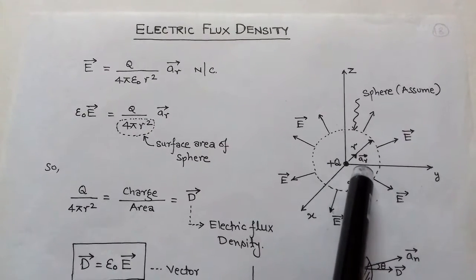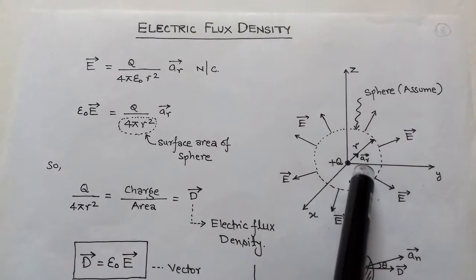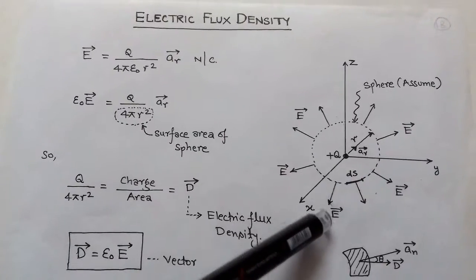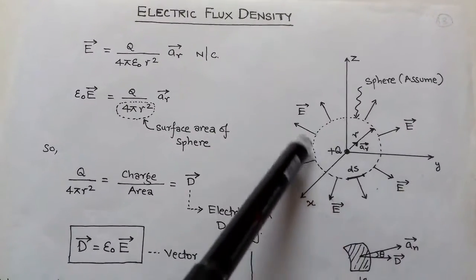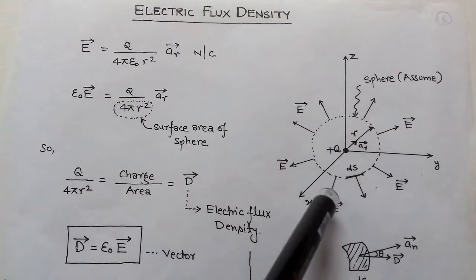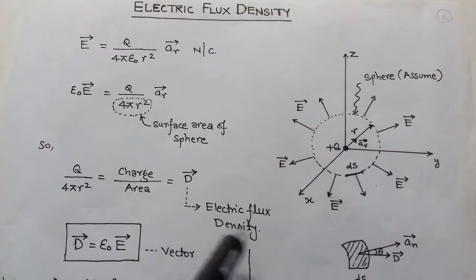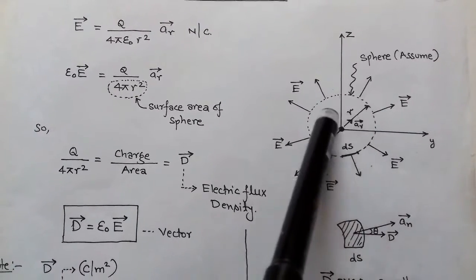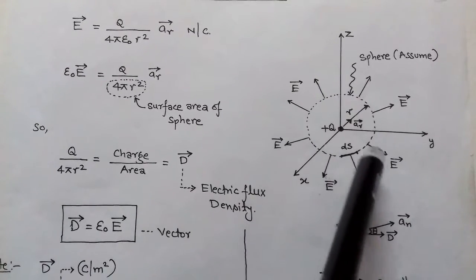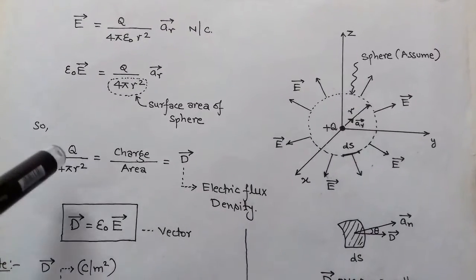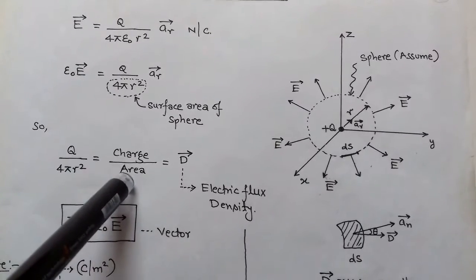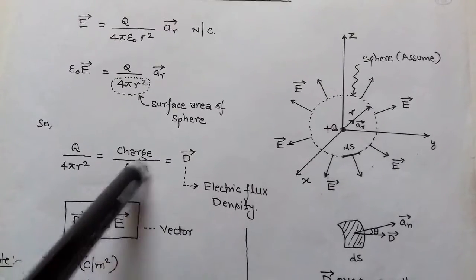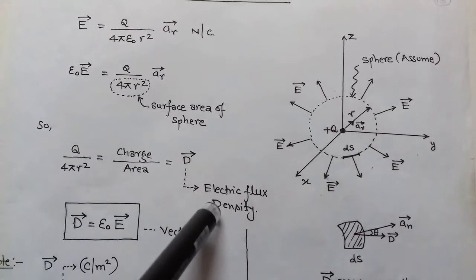This R has a unit vector. The electric field lines passing through this surface represent electric flux. So Q upon 4πR² is charge Q divided by area 4πR², and charge upon area is called electric flux density.